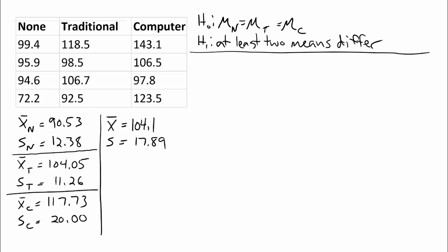To conduct the test, I need to start by computing the sum of squares, then compute the mean squares, and put these together into an F-test. I'll start with the sum of squares between. That equation is the sum over groups from j equals 1 to p, where p is the number of groups, of the number of people in each group times the difference between the group mean and the grand mean, squared.